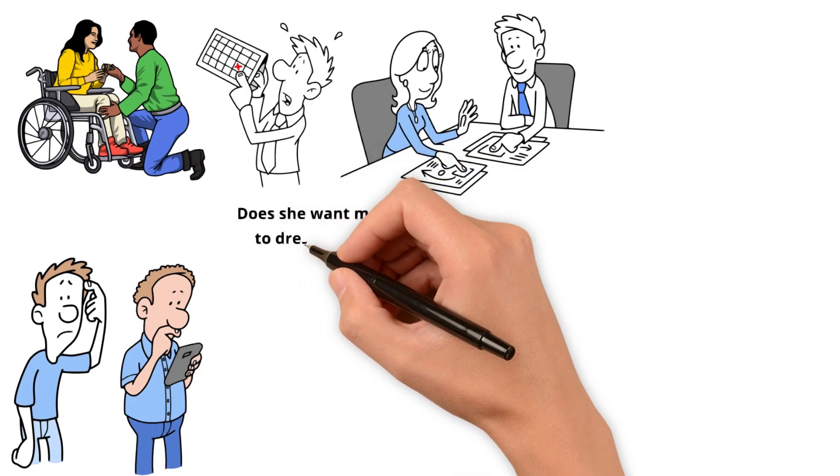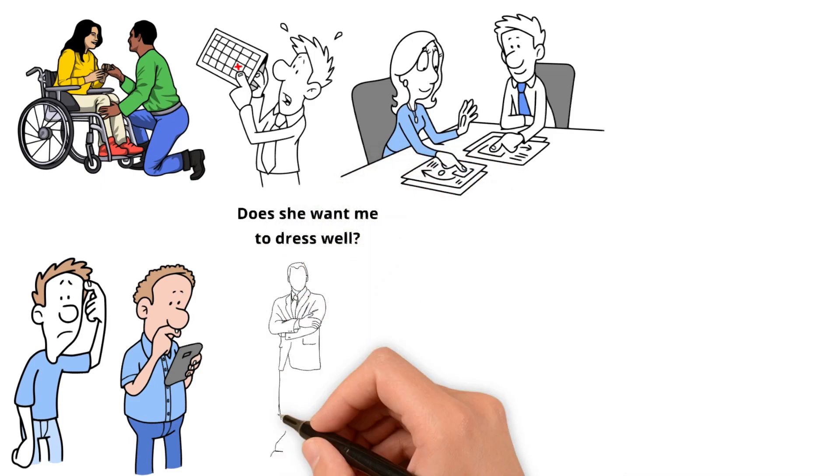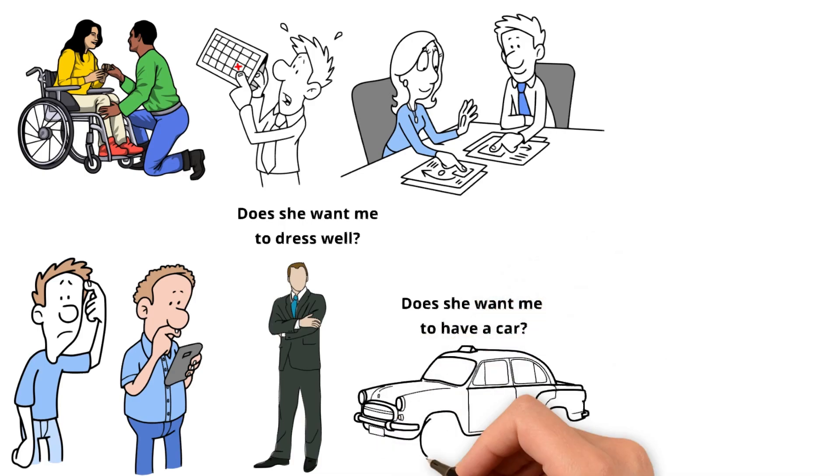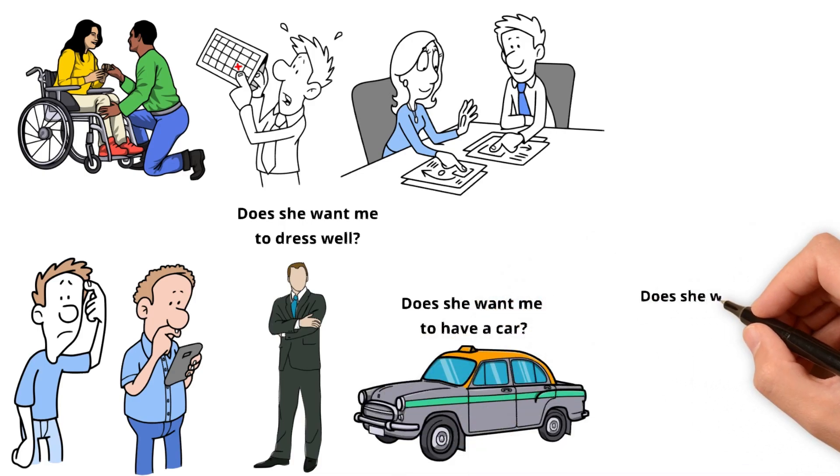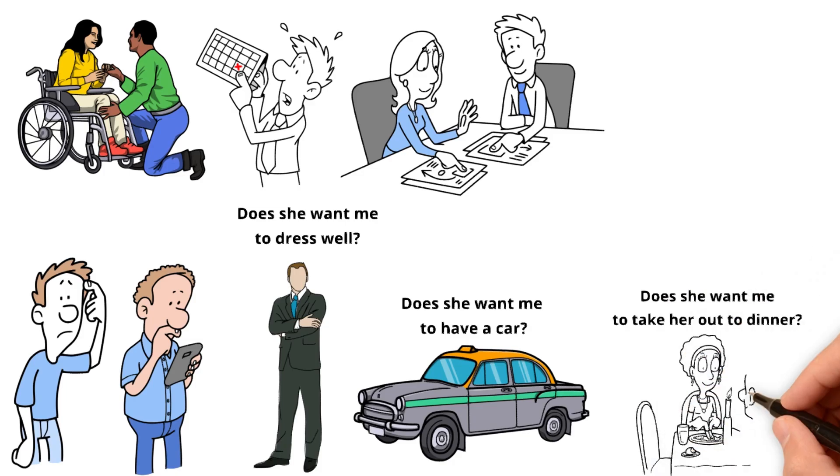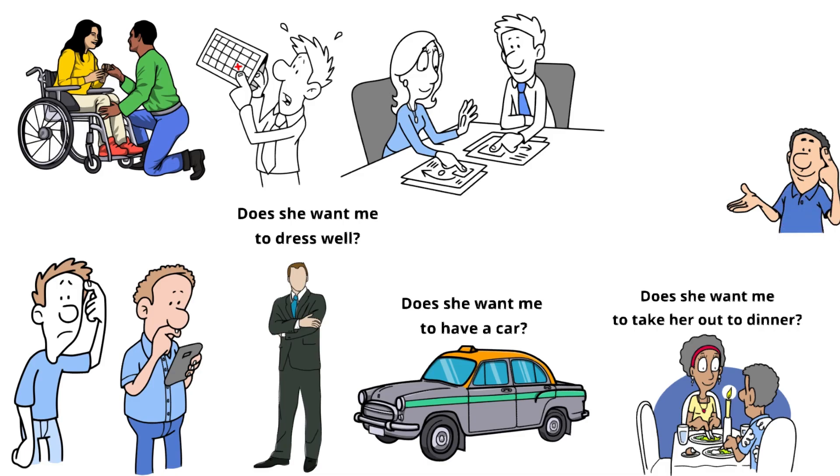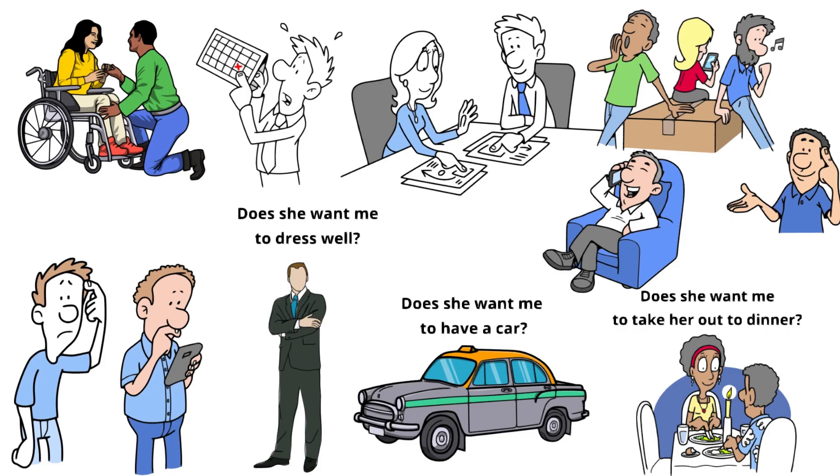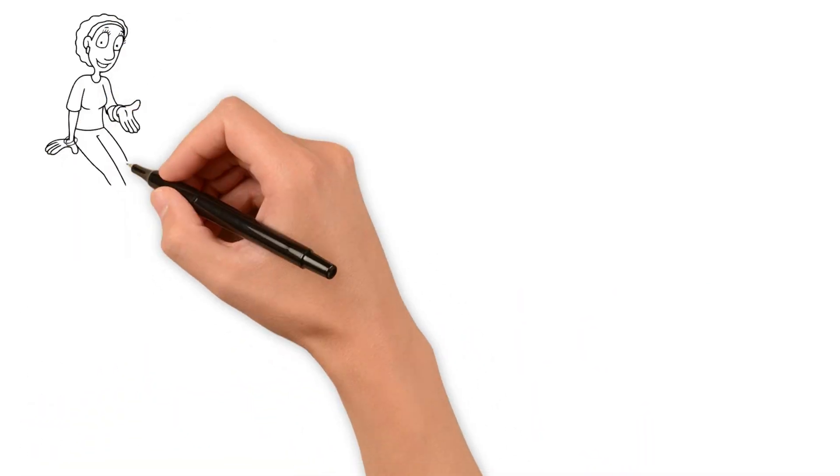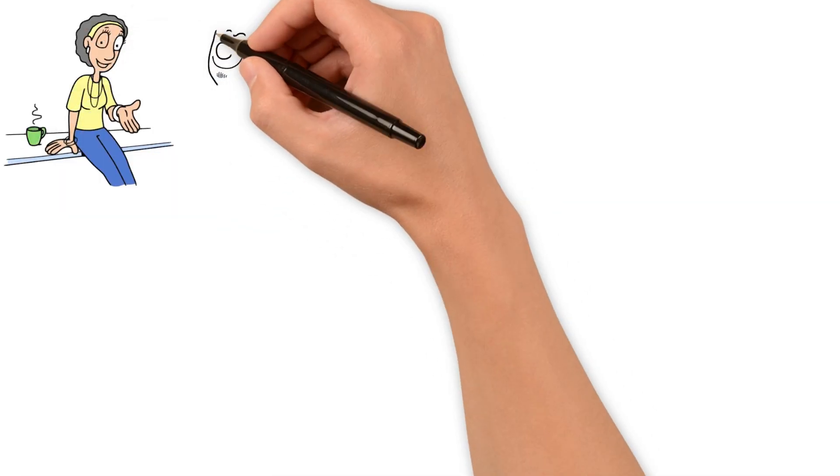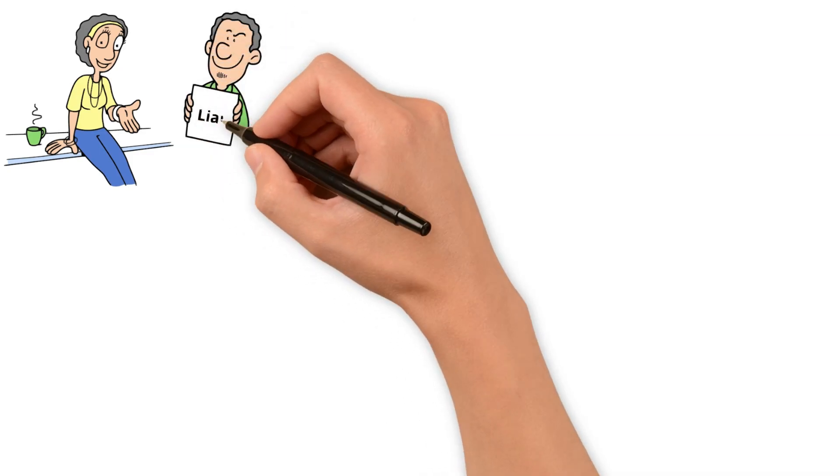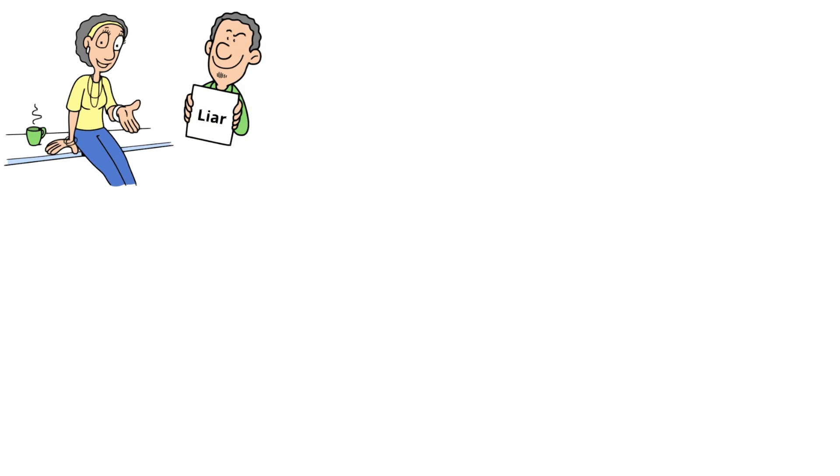Does she want me to dress well? Well, so I'm going to dress well. Does she want me to have a car? I'll buy a car. Does she want me to take her out to dinner? So I'll do it. And he'll learn these rules to make it happen. Eventually, he'll cheat. He's going to tell you what you want to hear to get what he wants. He will put his need over honesty and morality. So the first thing that explains why a man doesn't stay is that he doesn't love you. He's just manipulated you, told you what you wanted to hear.